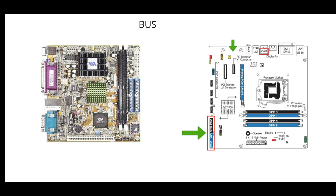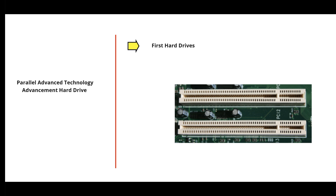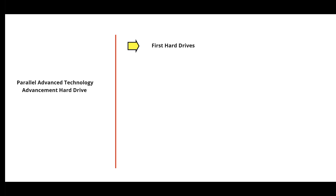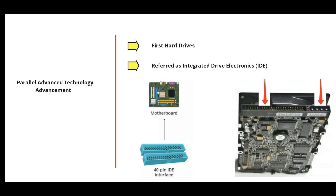Different hard drive types are distinguished based on their interface. PATA and SATA are both bus interfaces for connecting hard drives. PATA stands for Parallel Advanced Technology Attachment. It is the first type of hard drive, also referred to as IDE (Integrated Drive Electronics). The term 'parallel' in PATA refers to data being sent 16 bits at a time through a single 16-bit connection in both directions. PATA uses larger connector pins for data and four pins for power.